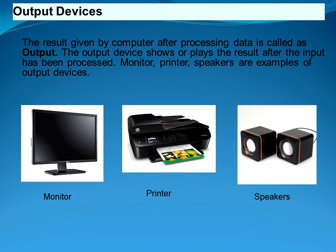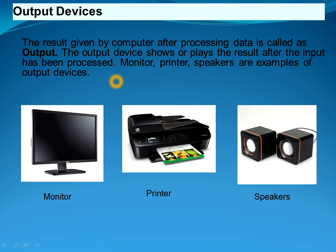The result given by a computer after processing data is called output. The output device shows or plays the result after the input has been processed. Monitor, printer, and speaker are all examples of output devices.